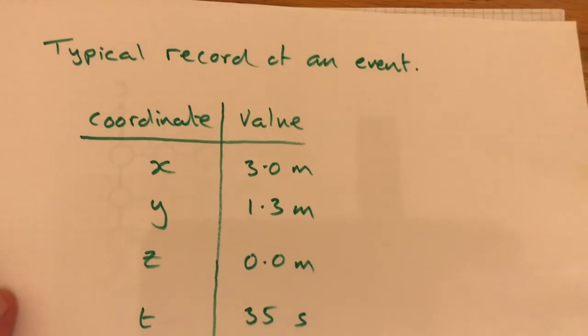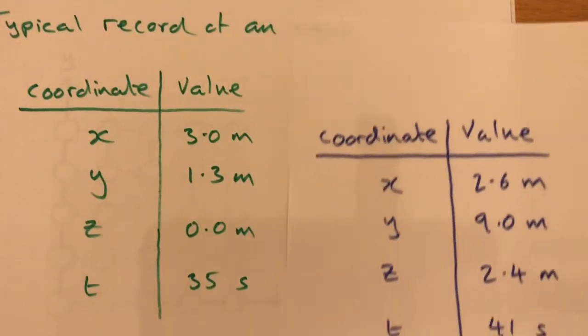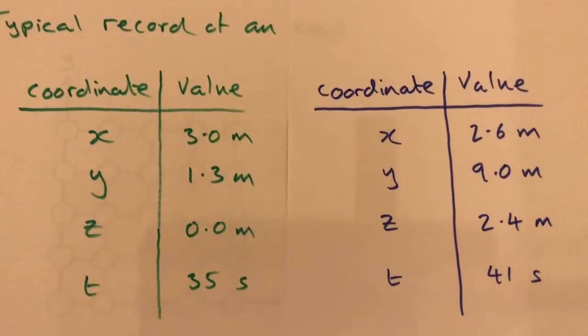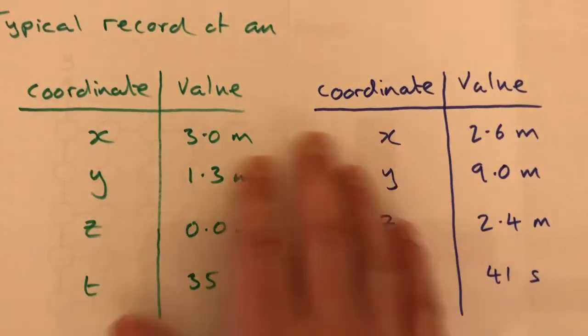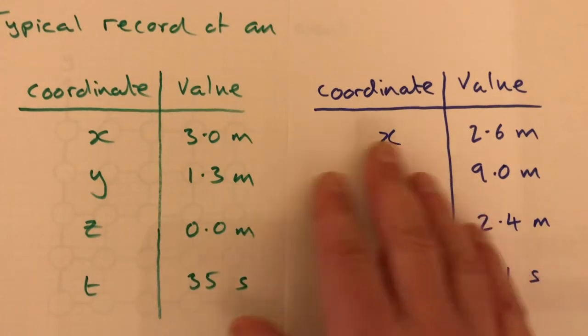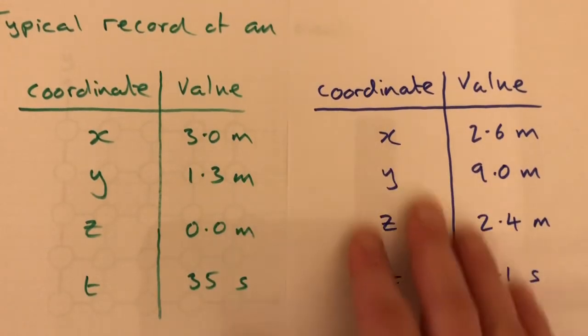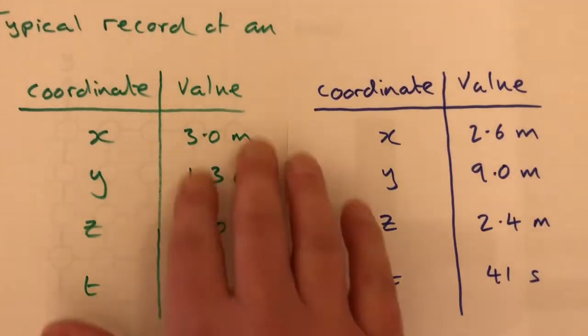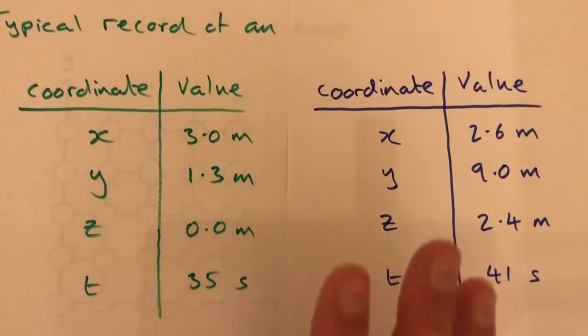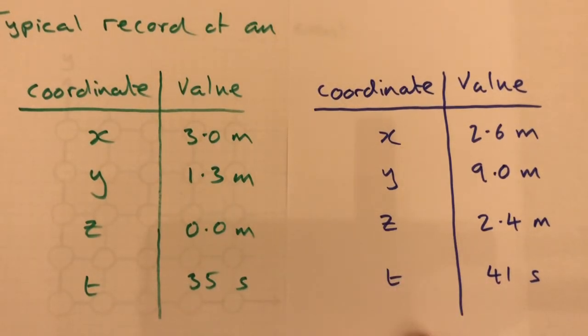Now it could be that we have somebody else with a completely different reference frame to us recording exactly the same event, but there's no requirement for their measurements to be the same as ours. As a matter of fact, they're almost guaranteed to be different.